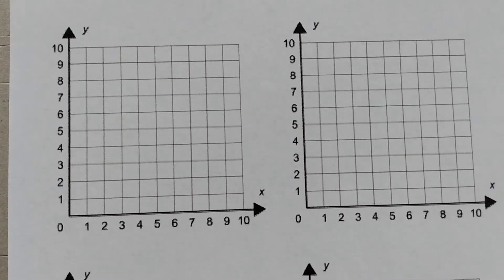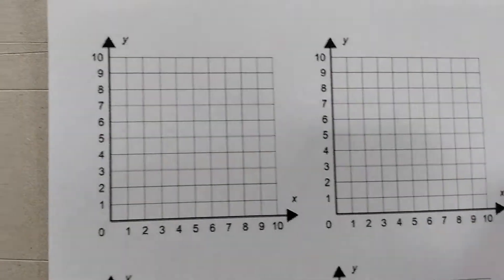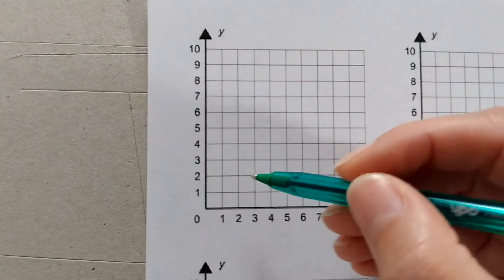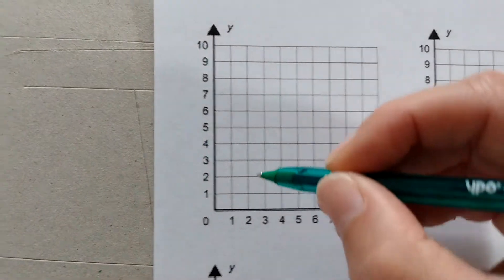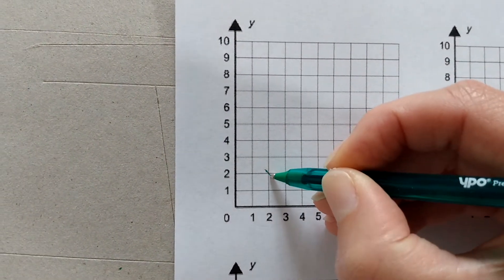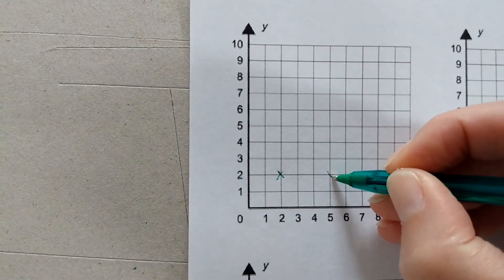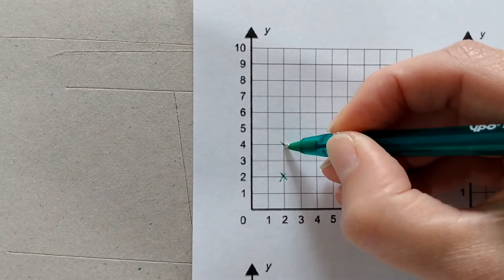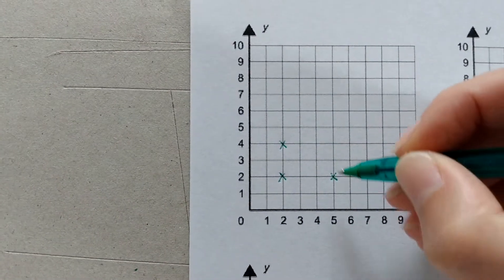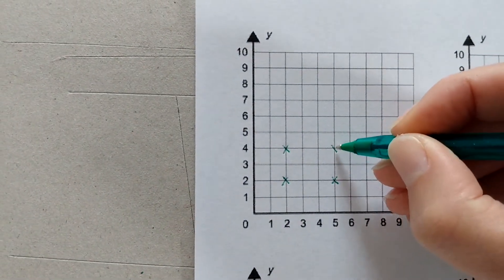Now I'll explain exactly what I mean by that, but to do that I need to start off by plotting some coordinates that make a shape. I'm going to go for 2,2, 5,2, 2,4 and 5,4.